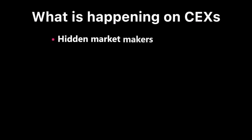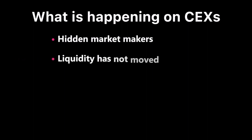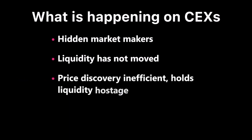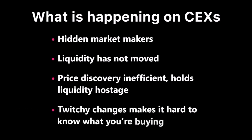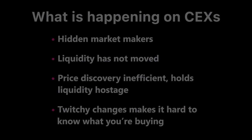Centralized exchanges act as hidden market makers. Liquidity which originally arrived in the centralized exchanges has not moved. Price discovery is inefficient and holds this liquidity hostage. Also, twitchy quick changes in order books makes it hard to know what you're buying.